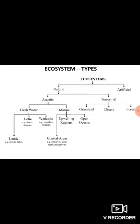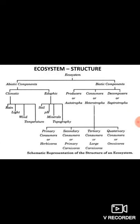We covered natural ecosystems, artificial ecosystems, and the categories under the natural ecosystem: the aquatic and terrestrial types, along with the different types of aquatic and terrestrial ecosystems. I hope you understood these concepts very clearly because you need to face a lot of multiple choice questions from this particular concept. Then we saw the structure of the ecosystem.